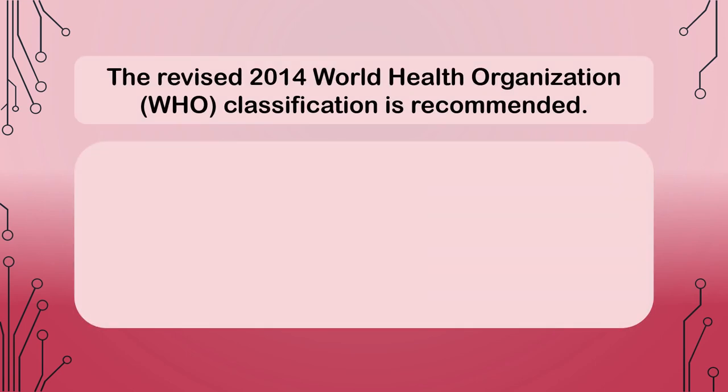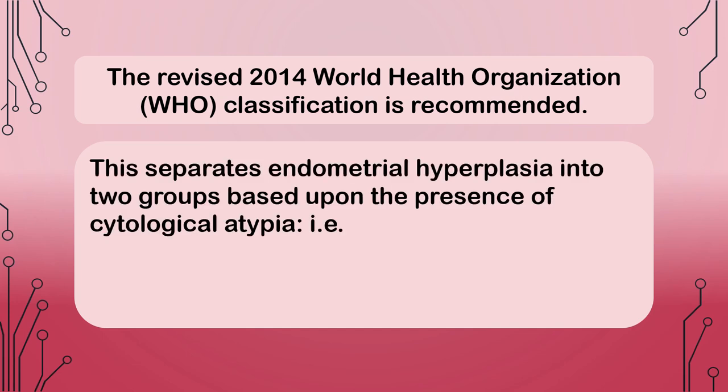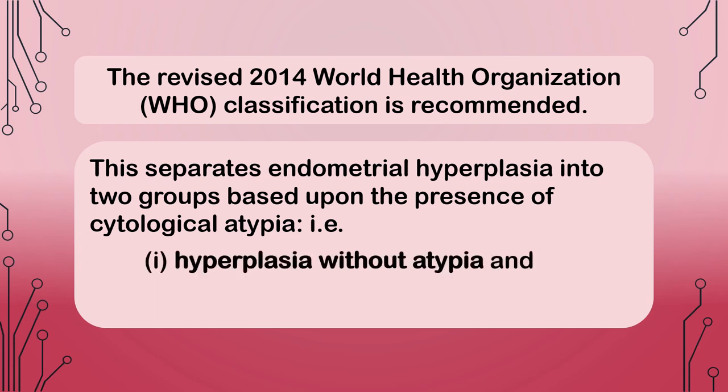The revised 2014 World Health Organization (WHO) classification is recommended. This separates endometrial hyperplasia into two groups based upon the presence of cytological atypia: hyperplasia without atypia, and atypical hyperplasia.